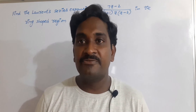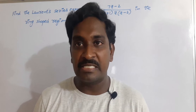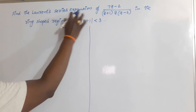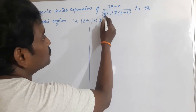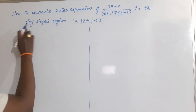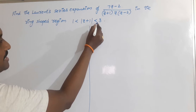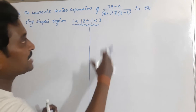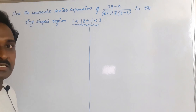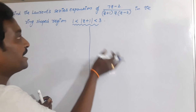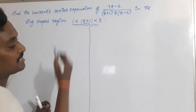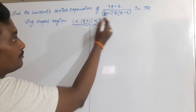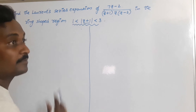Hi everyone, welcome back to our channel. In this video I would like to explain a problem on Laurent series expansion. The statement of the given problem: find the Laurent series expansion of (7z - 2) / [(z + 1)(z)(z - 2)] in the ring-shaped region 1 < |z + 1| < 3. In this ring-shaped region we have to find the expansion in negative and positive powers of the term (z + 1).